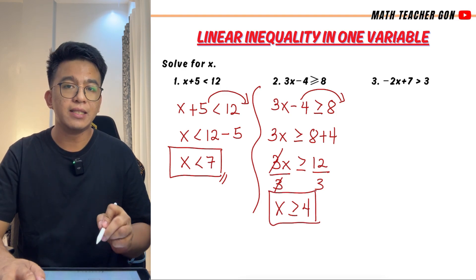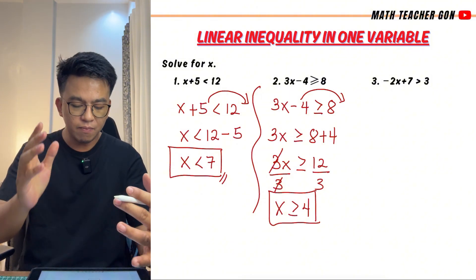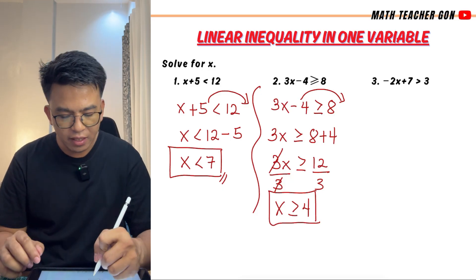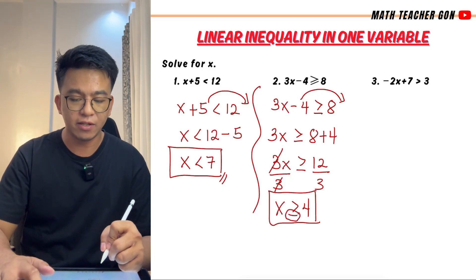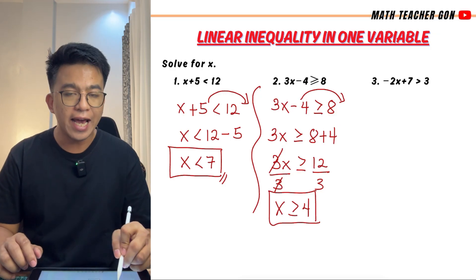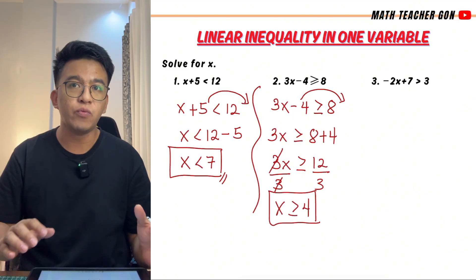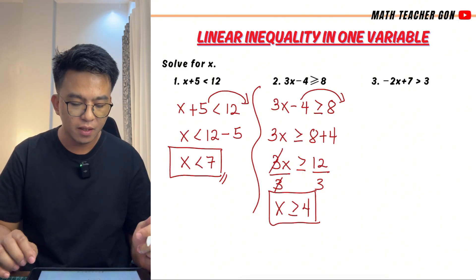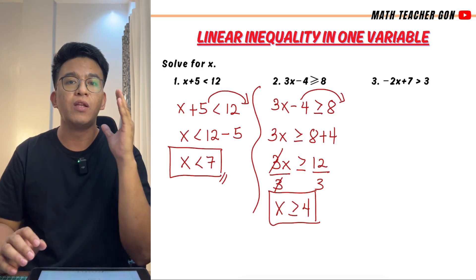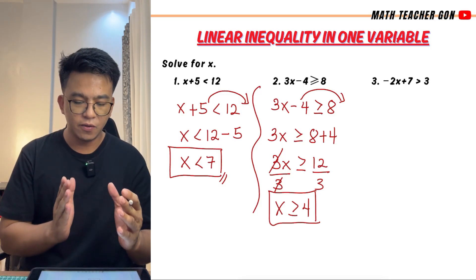This is the answer or the solution set for this inequality. What does it mean if we have x is greater than or equal to 4? Since we have the bar sign under the greater than symbol, meaning 4 is included. Unlike the first example, we don't have the bar sign, that's why 7 is not included. So x is greater than or equal to 4 means it will start from 4 and going up. Those are the possible values of x.